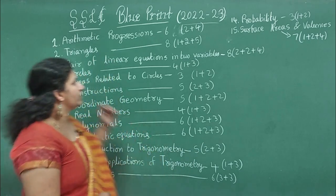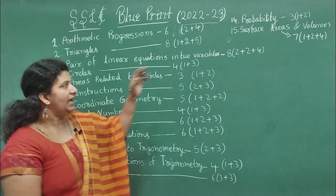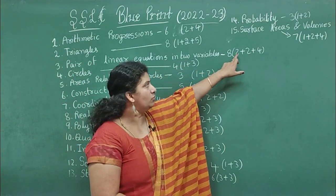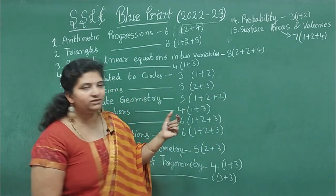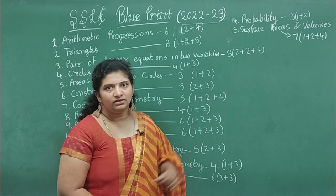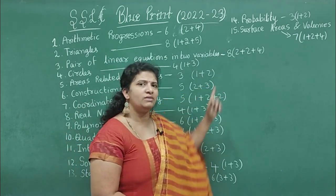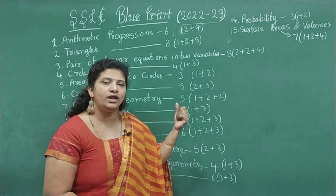Third chapter, Pair of Linear Equations in Two Variables - 8 marks weightage. Two marks one question, another two marks, and four marks we may expect. One compulsory graph carries 4 marks. For these two problems, either they may give two problems to solve in any method, or any word problem.